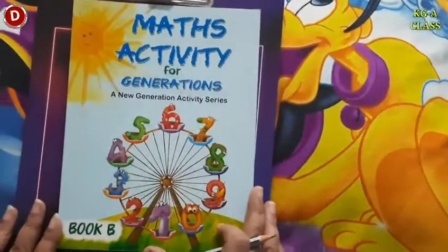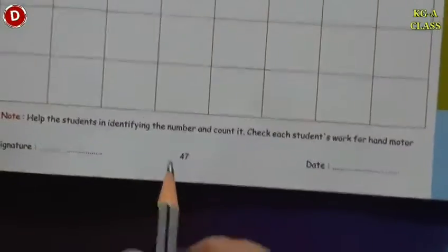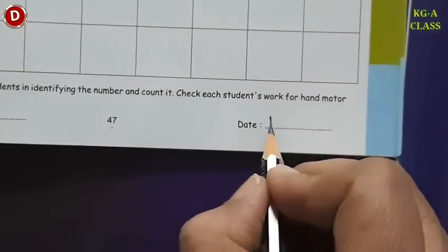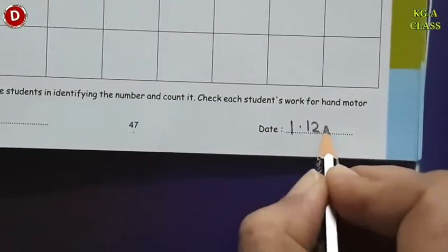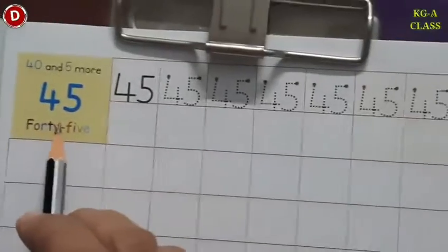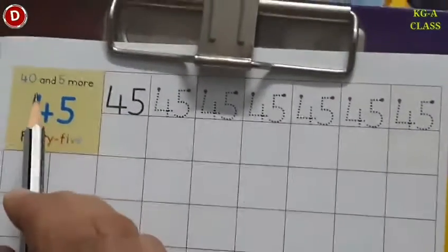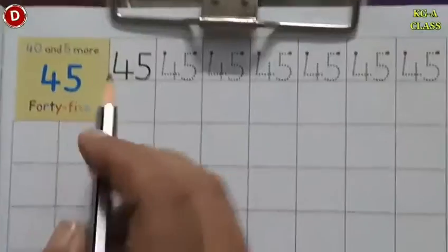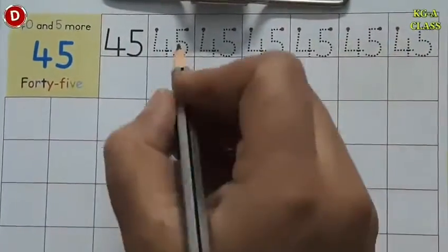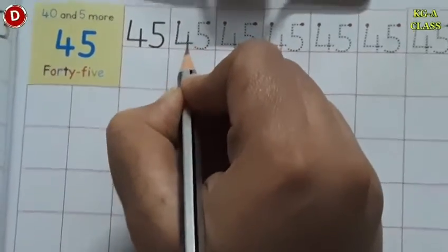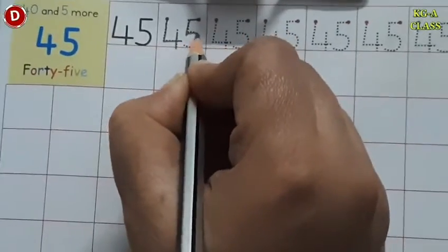Children, now bring your maths activity book. Open page number 47 and write today's date. Today is 1st December 2021. We will trace and write number 45 and 46. So 40 and 5 more makes 45. In the first line, we will trace and write. Put your pencil on the pink dot and trace these little dots like this. 4 and 5, 45.